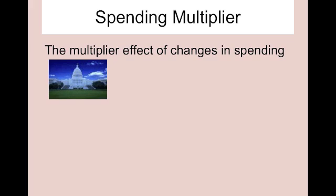It's the gap that exists between what you potentially should be making and what you're actually making. If you were achieving potential GDP, then the GDP gap would be zero. But in this economy, the GDP gap is $100 million.